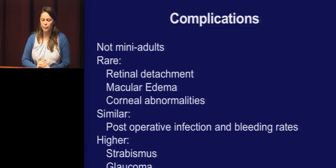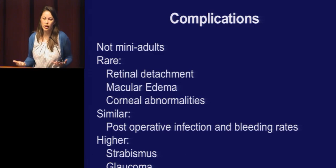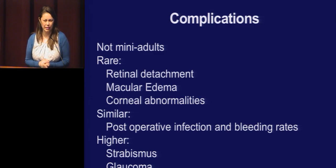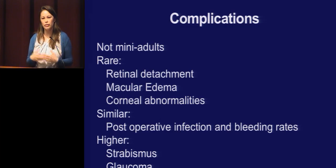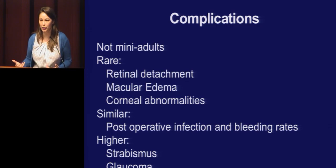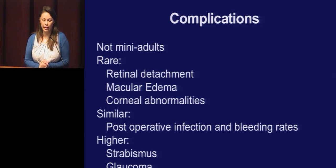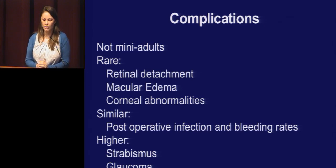Kids are not small adults. Things that happen in adults don't really happen as commonly in kids. They're not going to get retinal detachments as commonly. Macular edema doesn't happen that much — whether it's because their eye is different, the vitreous is different, or the surgery is different. They're less likely to get corneal abnormalities if you avoid clear corneal incisions. Post-operative infection and bleeding rates have been reported as similar to adults, but they will have higher issues with inflammation, strabismus, glaucoma, and amblyopia.